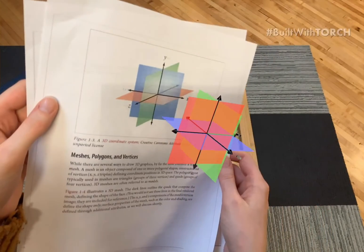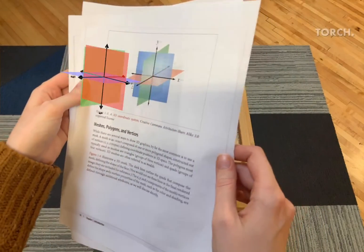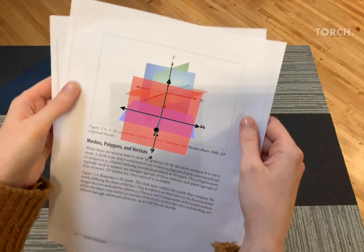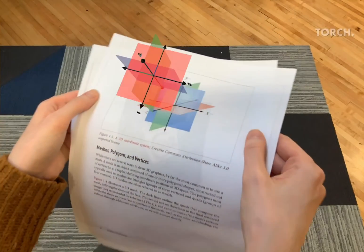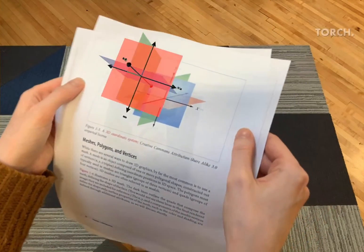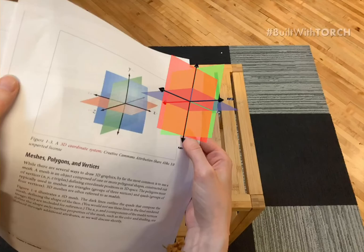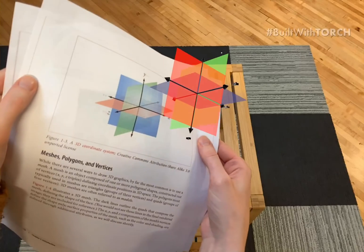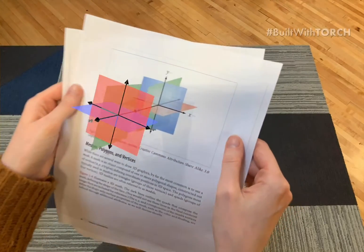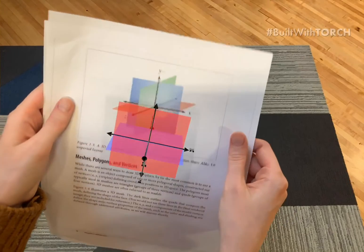For example, this is a graph intended to show the spatial axes, but it can be a struggle to explain that the z-axis is forward and backwards. With the graph living in 3D space, we are able to see the graph from all angles and get a strong sense of which direction matches which axis.